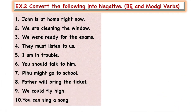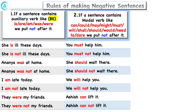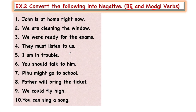In this exercise, we convert sentences containing be verbs and modal verbs. If a sentence contains a be verb — is, are, am, was, were — we only put 'not' after it; no helping verb is needed. Like: 'She is ill these days' → 'She is not ill these days.' 'Ananya was at home' → 'Ananya was not at home.' Similarly, if a sentence contains modal verbs, we put 'not' after them. 'You must help him' → 'You must not help him.' 'You should wait there' → 'You should not wait there.'